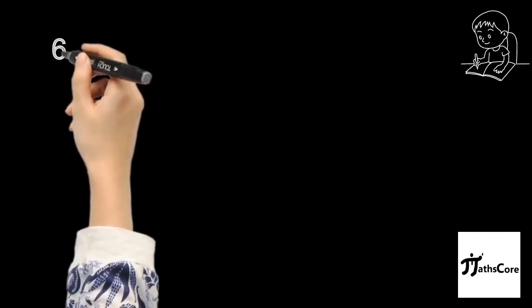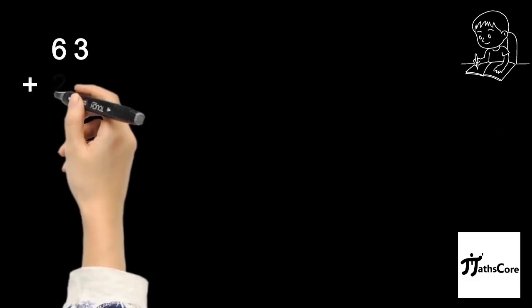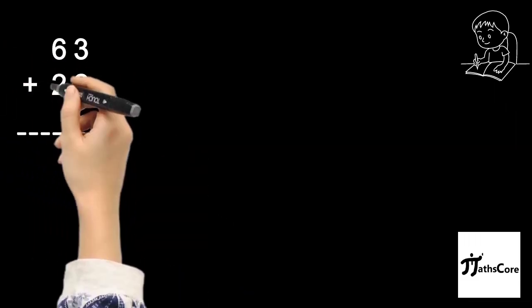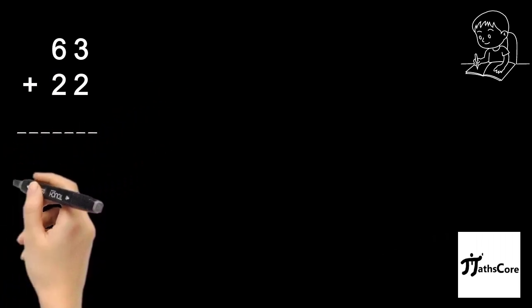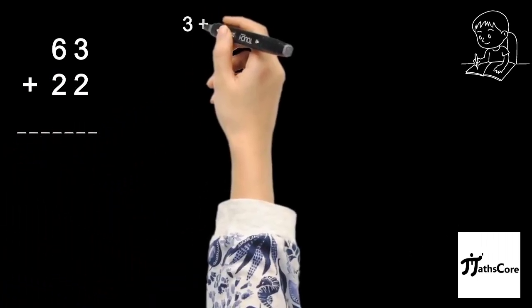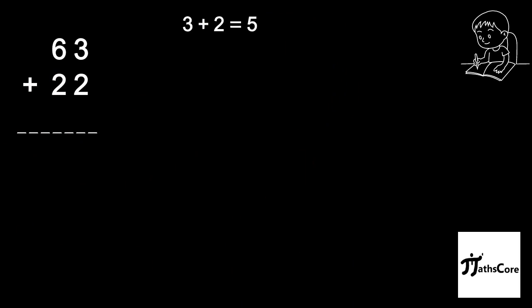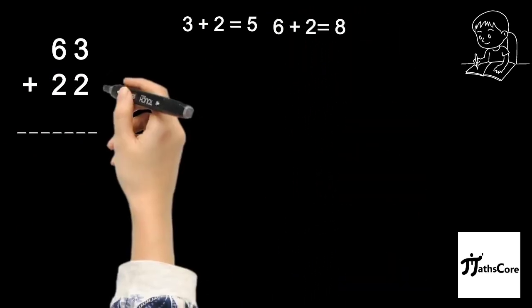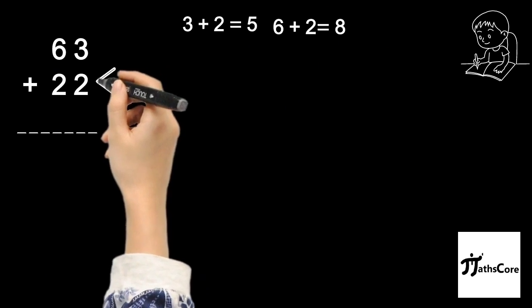Let us take one more example: 63 plus 22. If you observe this example, then you will find place-wise addition of digits is equal to single digits. 3 plus 2 is equal to 5, and 6 plus 2 is equal to 8. So you can solve this example by using the normal method. But for your understanding, I will solve this example by using the vinculum method.